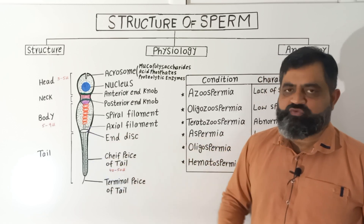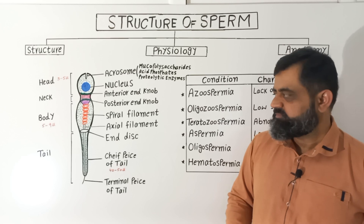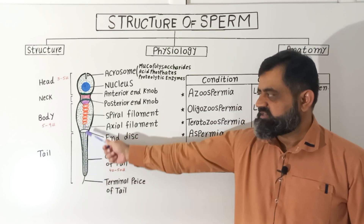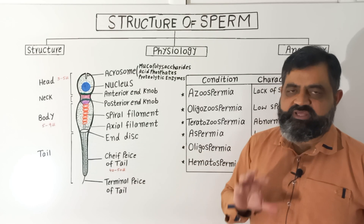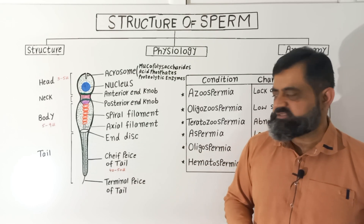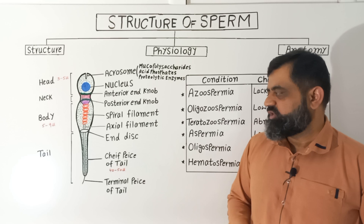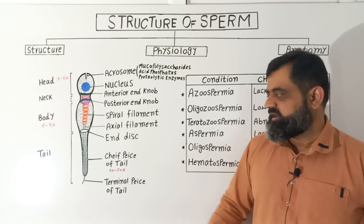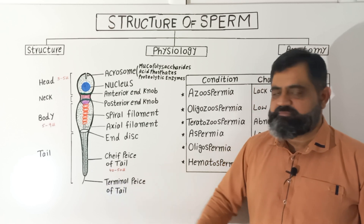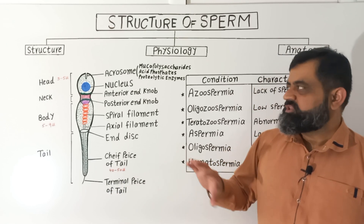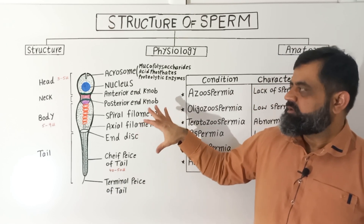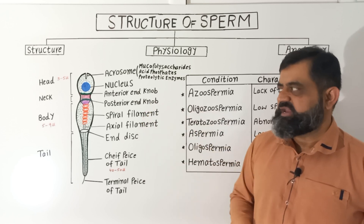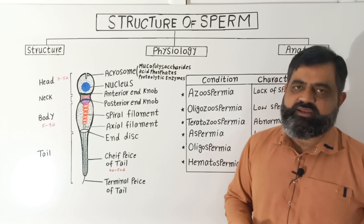The tail is usually 40 to 50 microns in length and contains the axial filament in the center as well as cytoplasm. The tail can be divided into two parts: the first part is known as the chief piece of the tail, which is the major part, and at the end there is the terminal piece of the tail. This completes the structure and anatomy of the sperm, comprising head, neck, body, and tail.